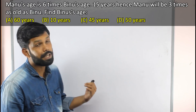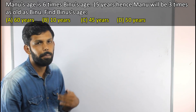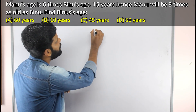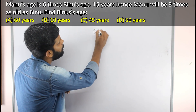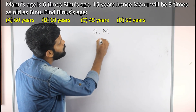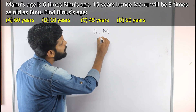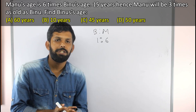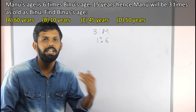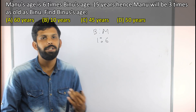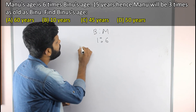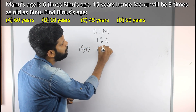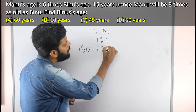Manu's age is six times that of Vinu. So we have Vinu to Manu ratio as 1 is to 6. Fifteen years hence — after 15 years — that ratio becomes 1 is to 3.